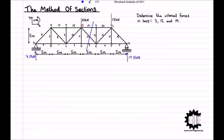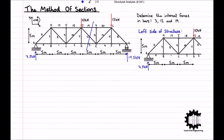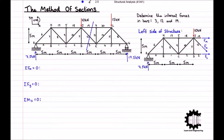For this example we will focus on the left part of the structure, and we will draw on the internal forces as extensions from the middle of the cut bars. Note that we are assuming the senses of the internal forces to be tensile, as they are in the direction towards the end of the bars. We must still treat this as a static structure where equilibrium applies, so the sum of all horizontal forces, vertical forces, and moments must equal zero. The internal forces F3, F12, and F19 are what stabilize the reactions and external forces applied to the structure.